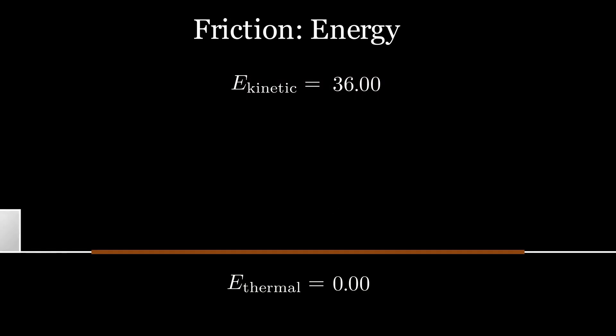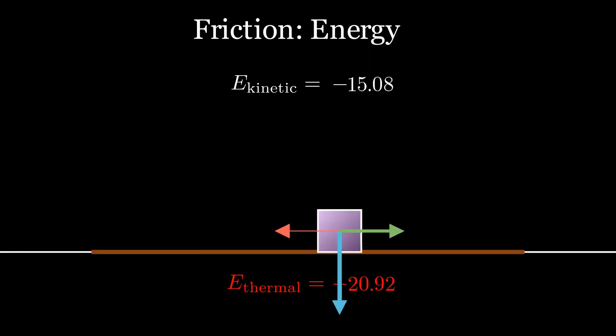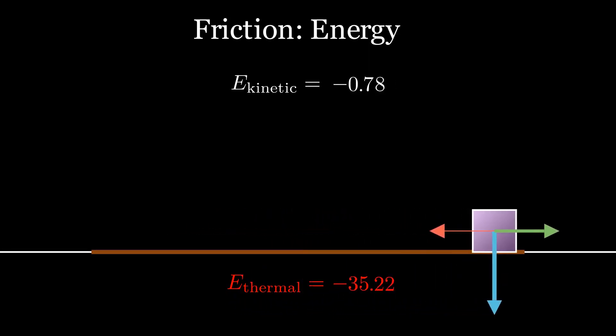But now we may have another problem with energy. When a positive mass block slows down through friction, it loses kinetic energy, which is lost as sound and heat. But a negative mass block has negative kinetic energy. And when it slows down, it becomes less negative. It has to gain energy. Where does this energy come from?